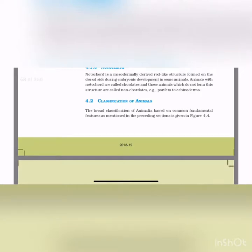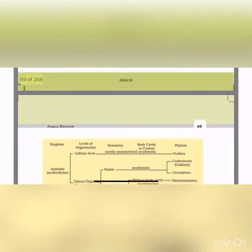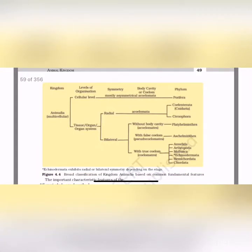Classification of animals: the broad classification of Animalia is based on common fundamental features. Kingdom Animalia is multicellular. At the cellular level of organization, animals are acoelomates and mostly asymmetrical — example: Porifera (sponges; porifera means pore-bearing organisms). At the tissue level, symmetry is of two types: radial and bilateral. Radial symmetry animals are acoelomates — Coelenterata and Ctenophora.